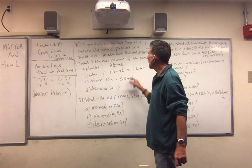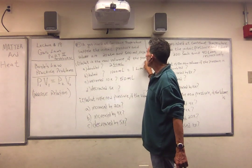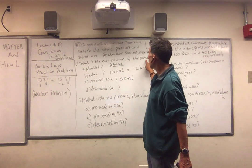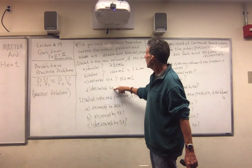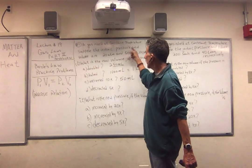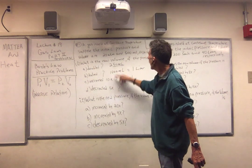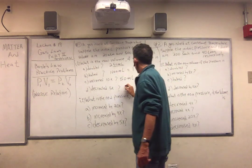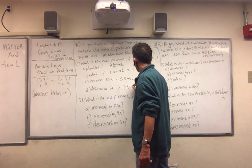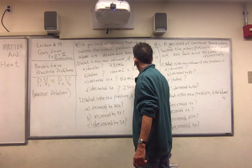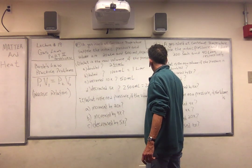And finally, what happens if we decrease the pressure by 5 times? The volume must increase by 5 times. So 5 times 500, you get 2,500 mL, which is 2.5 liters.